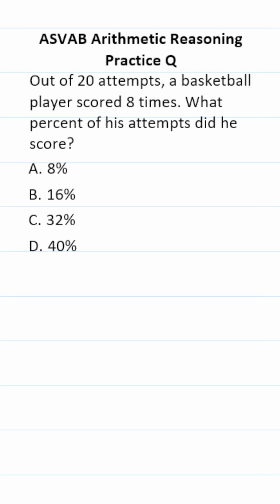This ASVAB arithmetic reasoning practice test question says out of 20 attempts, a basketball player scored eight times. What percent of his attempts did he score?